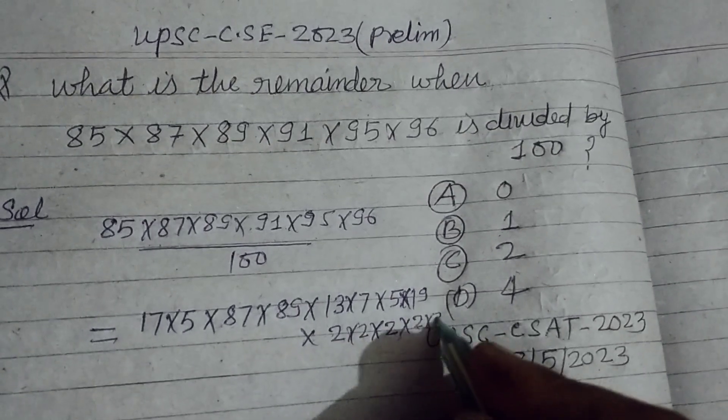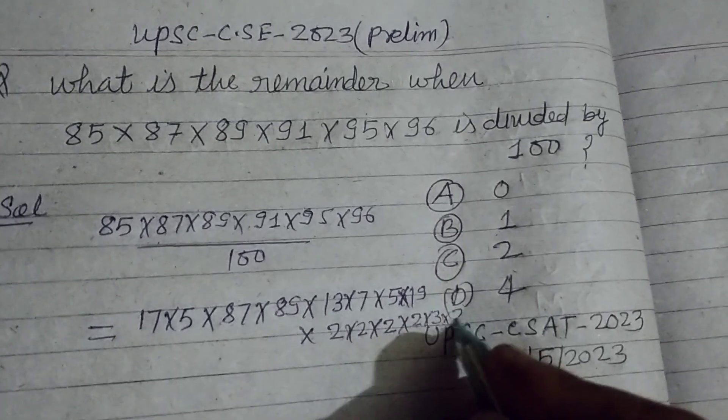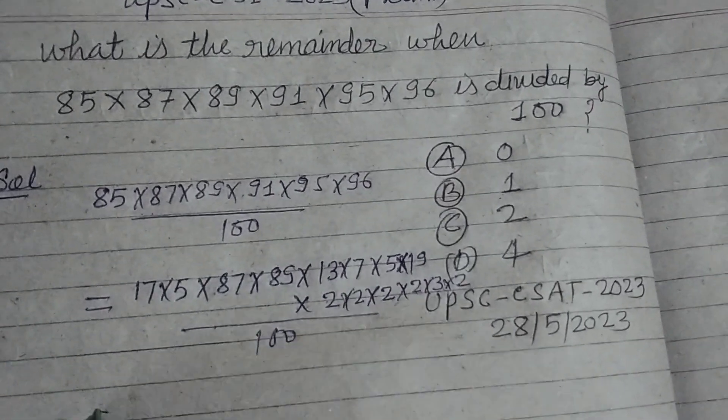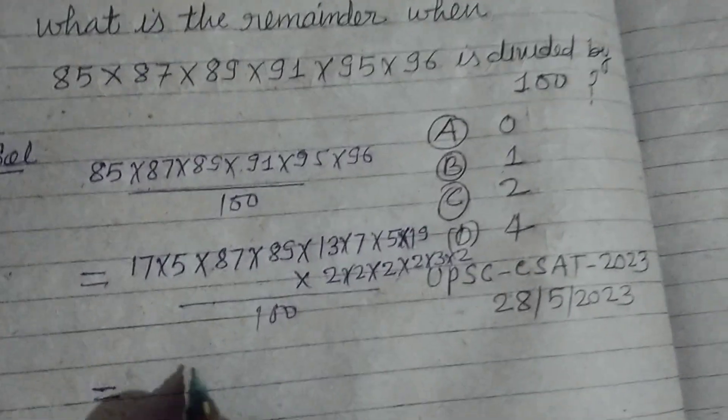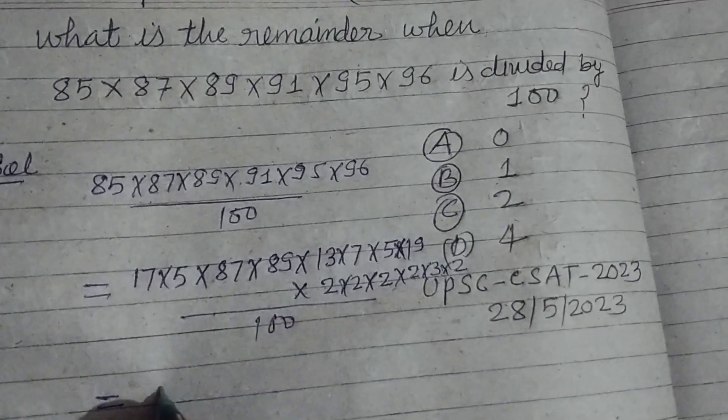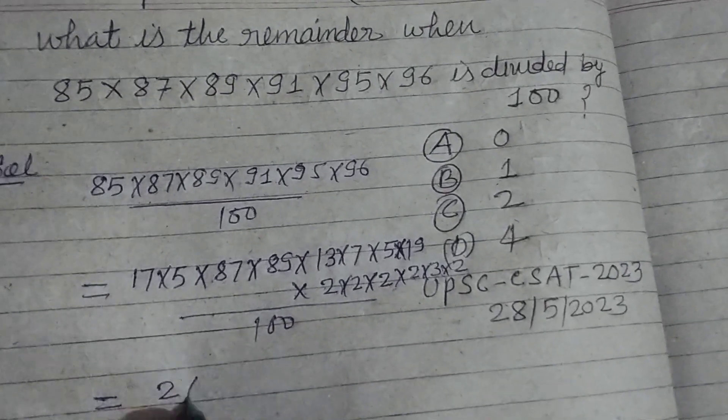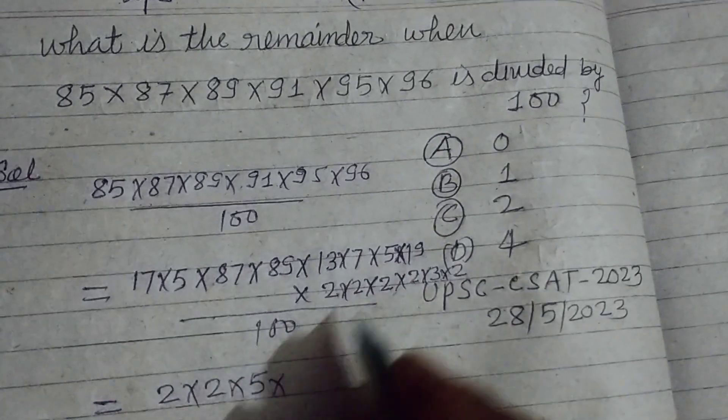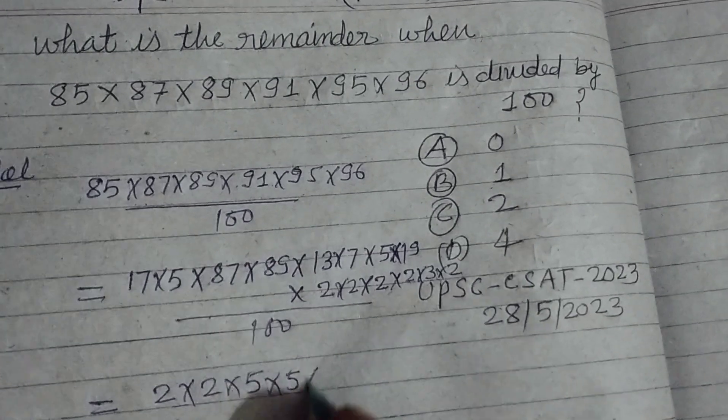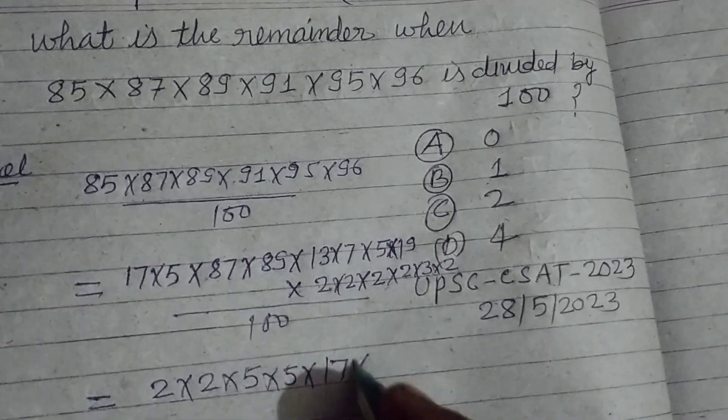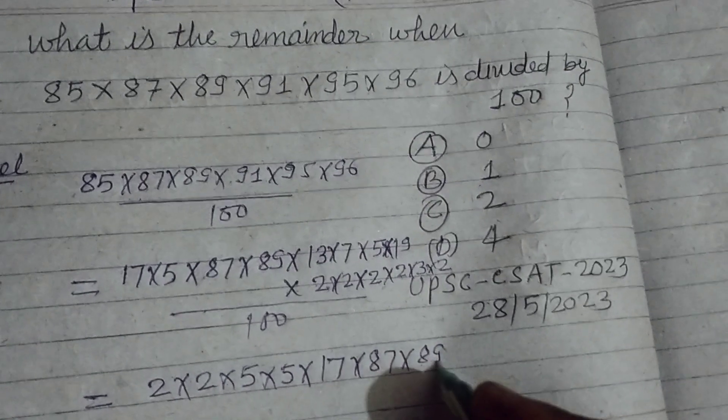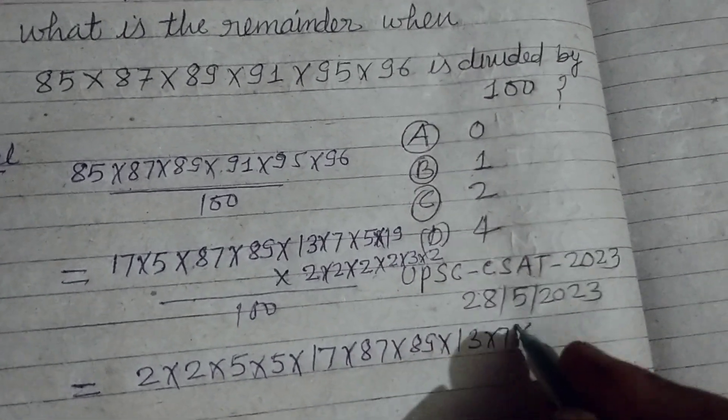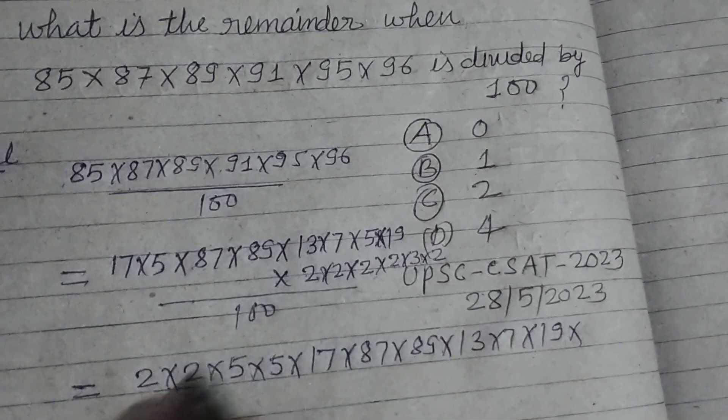Upon 100, we write the factors of 5 and 2 together. So 2×2×5×5, then 17×87×89×13×7×19. Here 2 is taken, so 1, 2, 3, 2×2×3 remain.